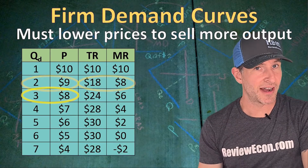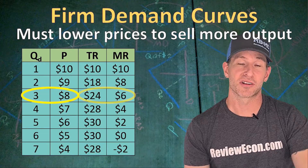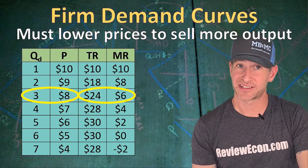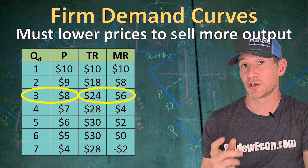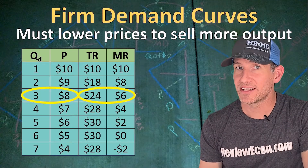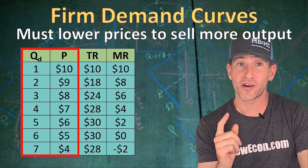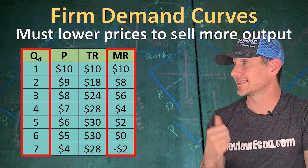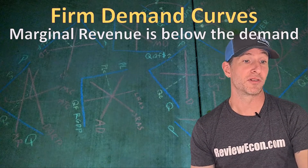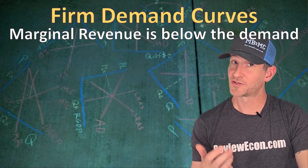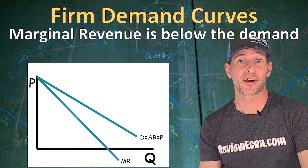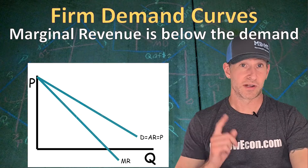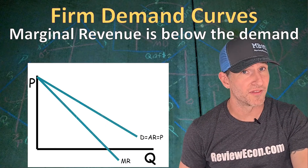If this firm wants to sell a third unit of output, they have to lower the price to $8, making total revenue $24 for those three units and marginal revenue just $6. Once again, marginal revenue is below the price. If we graph this out, the quantity and price give us our demand curve, but quantity graphed with marginal revenue gives us our marginal revenue curve. Since marginal revenue is less than the price, marginal revenue is going to be below the demand curve. We have a downward sloping demand curve with a marginal revenue curve below the demand — technically twice the slope. So when you draw these graphs, make sure you put marginal revenue below the demand.